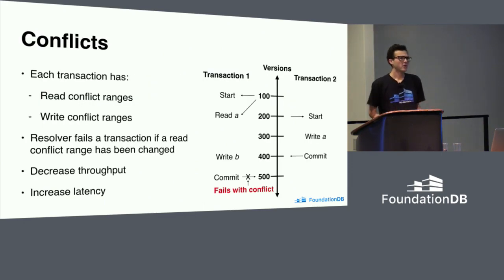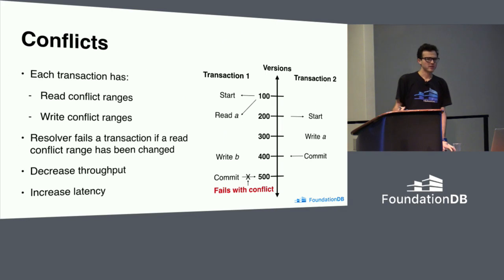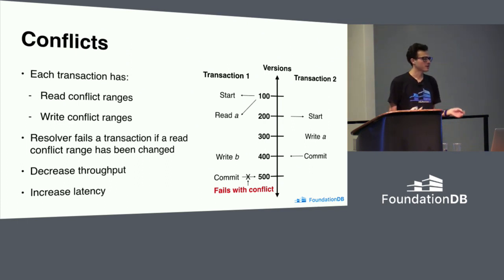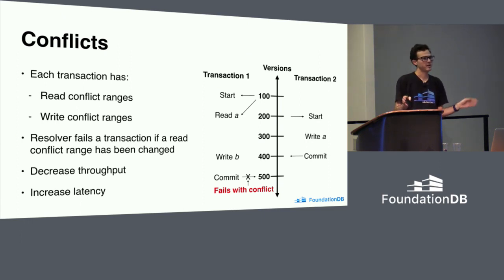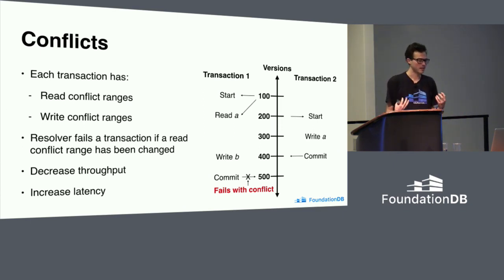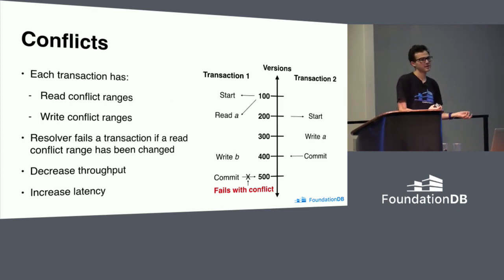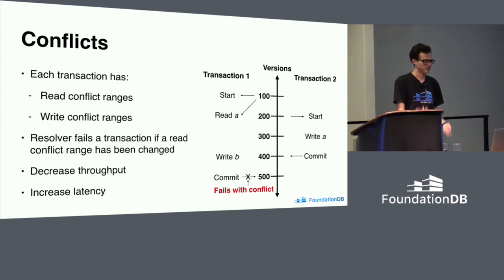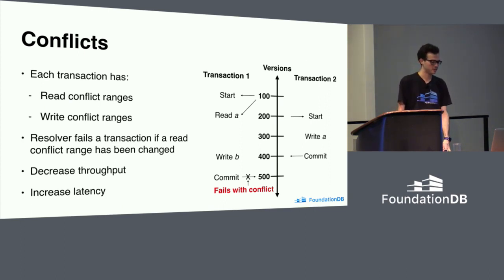First, going into what a conflict is. A conflict is when you have two transactions that are trying to modify the same data at once. In FoundationDB, every time you do a read, the client — without you having to do anything — will record what ranges of keys you read and add this to a set of read conflict ranges kept in memory. Likewise, whenever you do a write, it modifies a separate set of write conflicts. When it goes to commit your transaction, it submits the read conflict set and the write conflict set along with any mutations. It's these conflict ranges that the resolvers use to determine which transactions need to be failed.